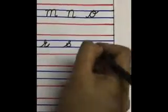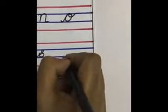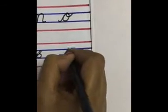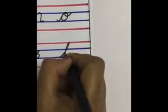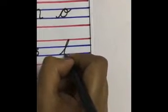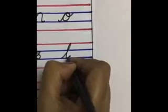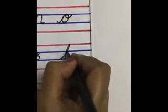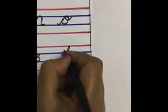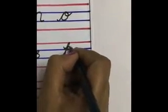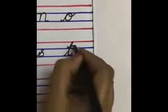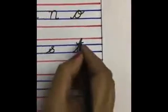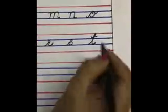Now from the third line, go up to the first line, come down to the third line and finish it. It is like L but you have to give a dash in the middle. This is small letter T.